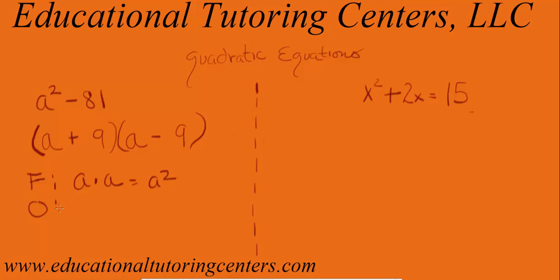And then you're doing O, which is the outside terms, which are here. So that would be a negative 9, because of the sign in front of it, times A, which is equal to a negative 9A.